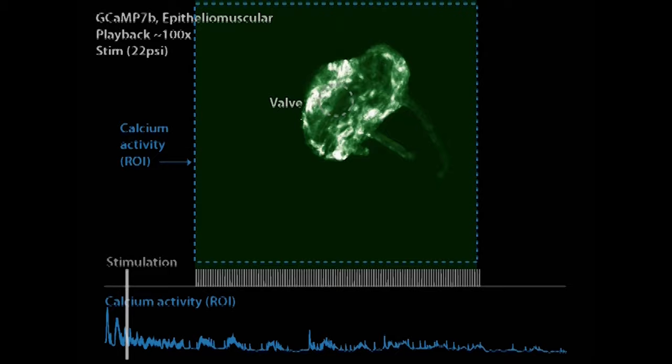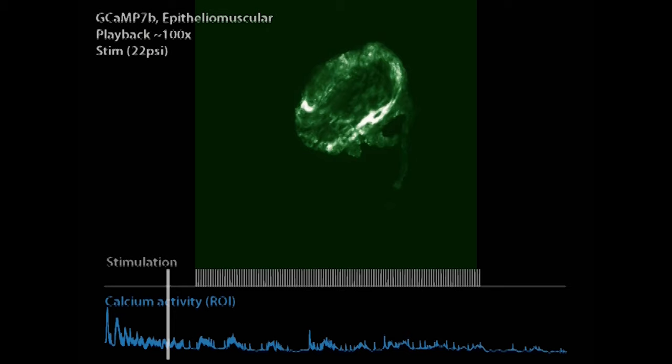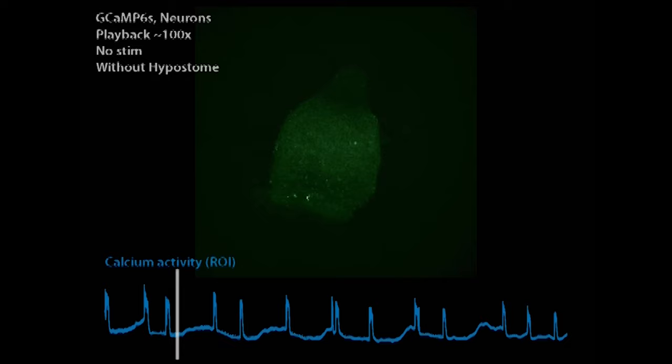These animals can self-renew their entire nervous system. They can live forever because they're regrowing every neuron in their body every 20 days. You can cut their head off, they regrow a new head. You can cut their foot off, they regrow a new foot. So these remarkable regenerative abilities—if we could understand them—we might be able to learn how we might be able to improve our own treatment of humans and how they might recover from injuries like traumatic brain disorder or stroke.